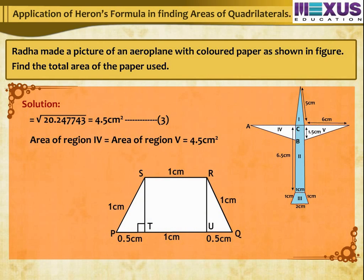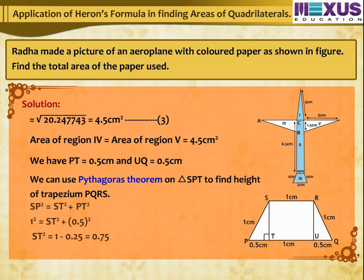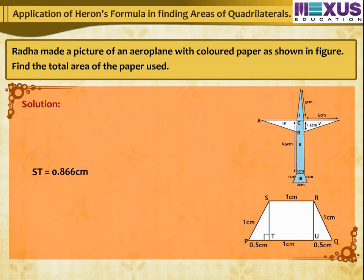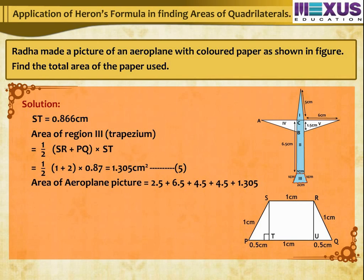Area of region 3 is a trapezium. Since we do not have the height, let's draw it separately. Drawing ST perpendicular to PQ and RU perpendicular to PQ, we get PT = 0.5 cm and UQ = 0.5 cm. Using Pythagoras theorem on triangle SPT, the height ST = 0.866 cm. Area of region 3 = ½ × (SR + PQ) × ST = 1.305 cm². Adding all 5 regions, total area of aeroplane = 19.305 cm².